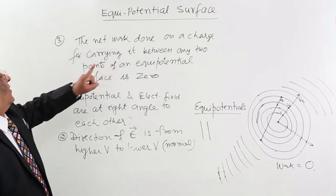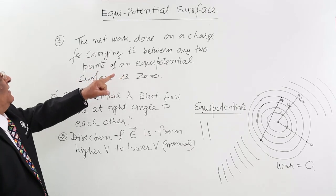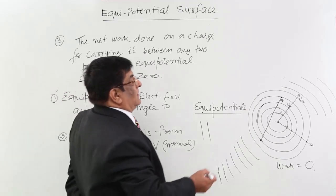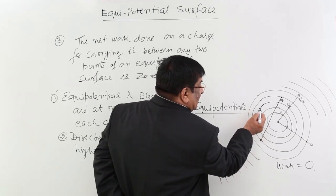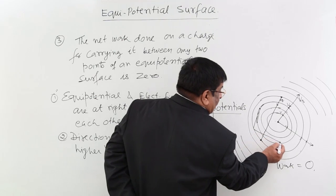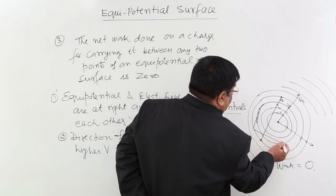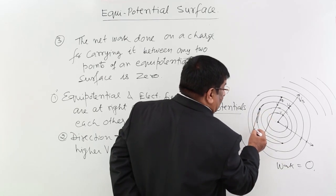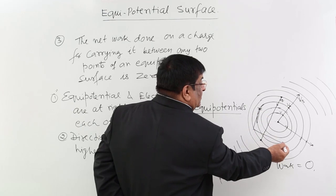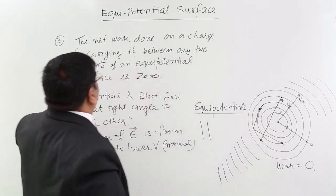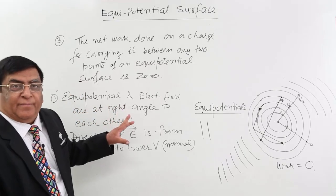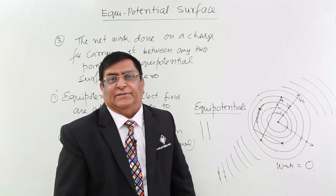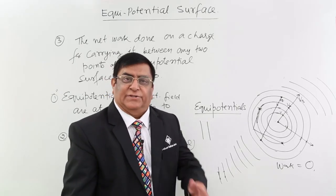The net work done on a charge for carrying it between any two points of an equipotential surface is zero. Whether I take the charge along a curved or direct path, as long as both endpoints lie on the same equipotential, the total net work done is zero. These are the three principles to remember, and in the next lecture we will look at the shapes of equipotentials for different charge configurations. Thank you very much.